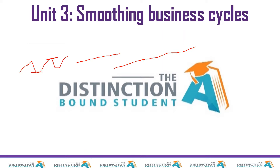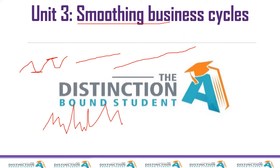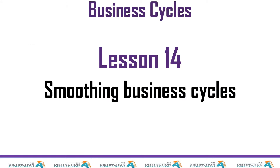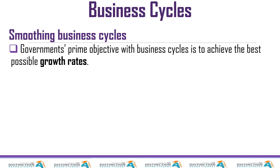We know it's not going to happen perfectly smoothly. But how do policymakers try to smooth business cycles? That is what we're going to answer in this particular lesson. It's lesson number 14: smoothing business cycles.